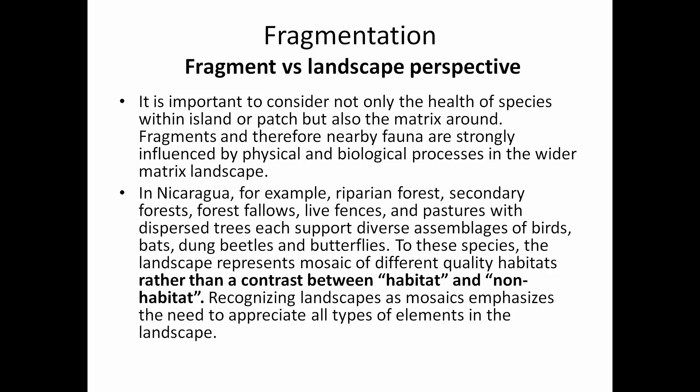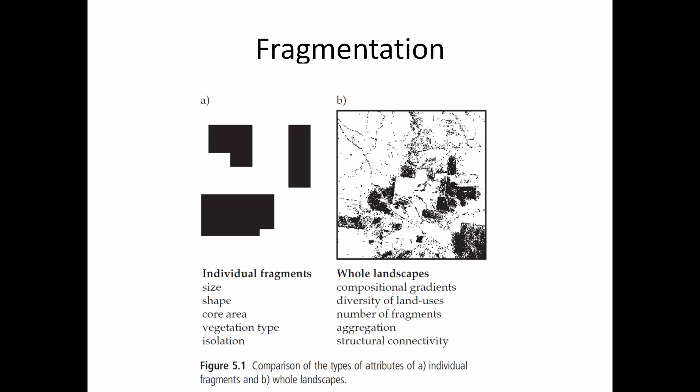The matrix is the land surrounding the patch. Animals are strongly influenced by physical and biological processes over that wider landscape. For example, in Nicaragua, riparian forests, secondary forests, forest fallows, live fences, pastures, and dispersed trees each support diverse assemblages of birds, bats, dung beetles, and butterflies. This whole landscape — meaning the tropical or riparian forest — is surrounded by something like live fences, forest fallows, and pastures that is not necessarily negative to these species. It's important to recognize the whole landscape and not just focus on individual patch size.